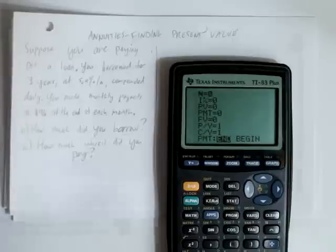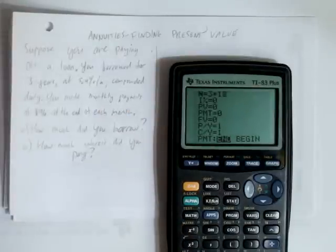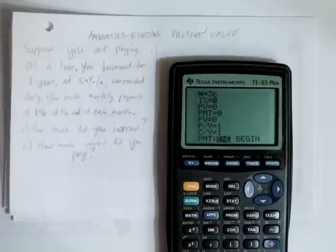Now we'll fill out the information given in the problem. It's 3 years, so n is 3 times how many payments per year, and we make monthly payments, so that's 3 years of 12 payments. Hit Enter, or 36 total payments.